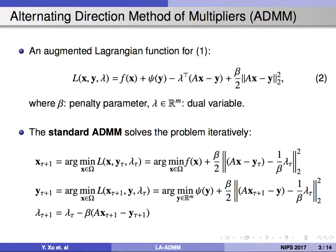A well-known method for solving this problem is ADMM. To employ ADMM, we usually write the augmented Lagrangian function for problem 1. Here beta is a penalty parameter and lambda is dual variables.